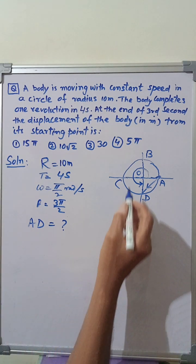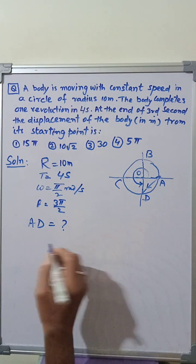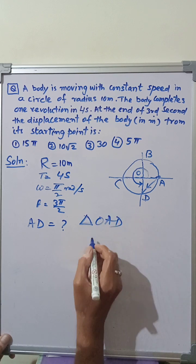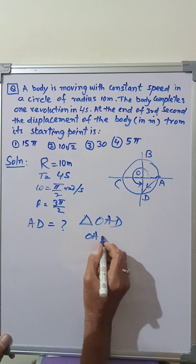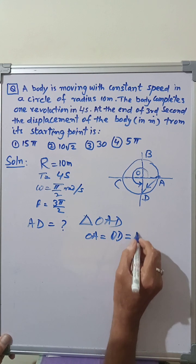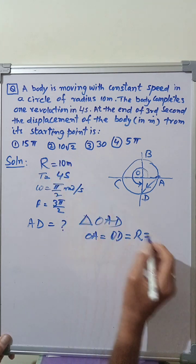Now, in triangle OAD, we have got OA is equal to OD is equal to R which is equal to 10 meters.